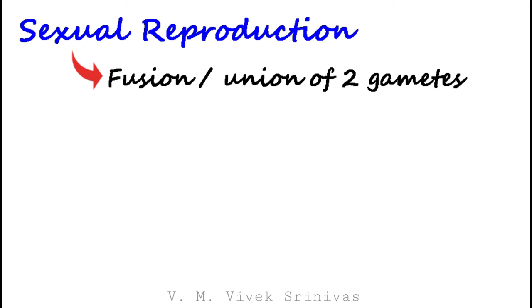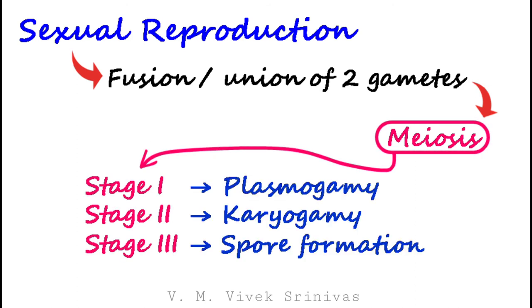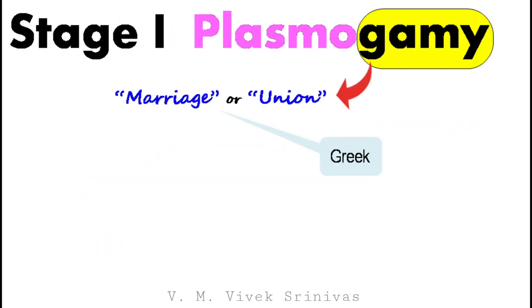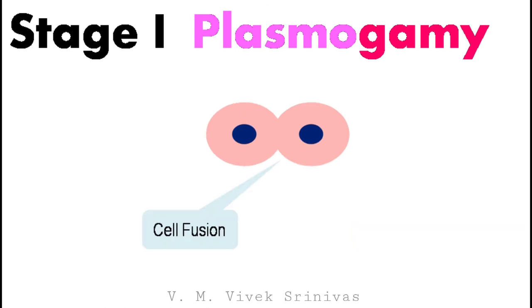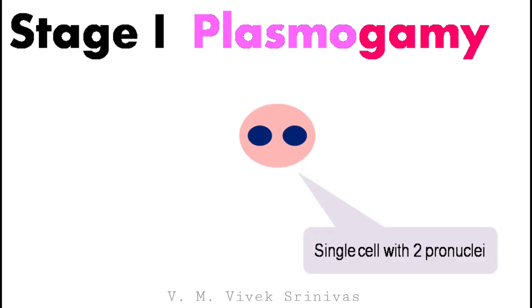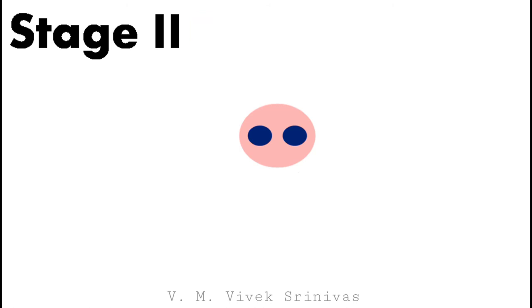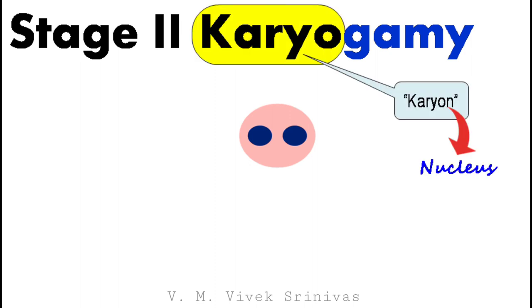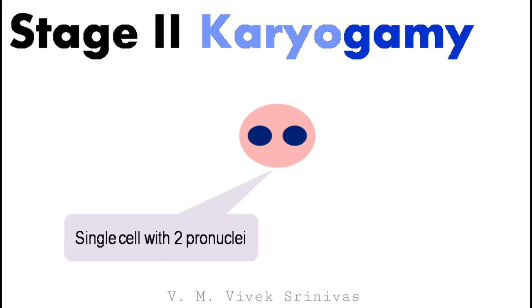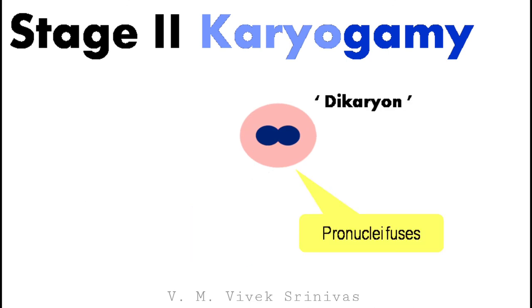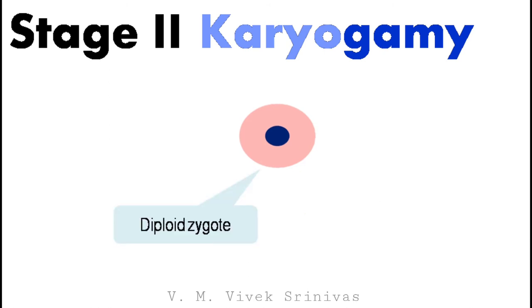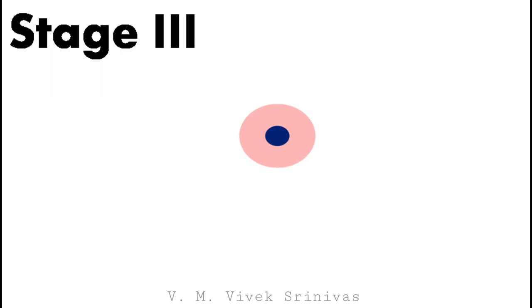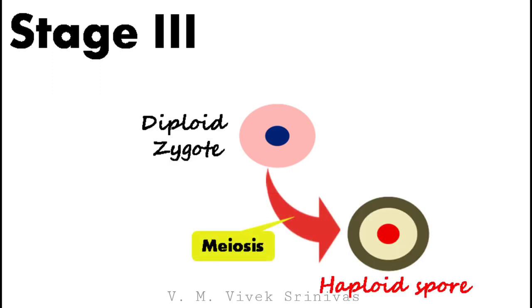Sexual reproduction occurs by fusion or union of two gametes by meiosis, which happens in three stages: plasmogamy, karyogamy, and spore formation. In Stage 1, plasmogamy — the word 'gamy' means marriage or union in Greek — the two haploid cells undergo cell fusion for the union of cytoplasm. At the end, there will be a single cell with two pronuclei. In Stage 2, karyogamy — 'karyon' means nucleus — the two pronuclei in the cell fuse to form a dikaryon, which then unites to form a diploid zygote. In Stage 3, this diploid zygote undergoes meiosis to form a haploid spore.